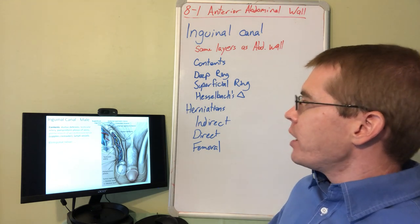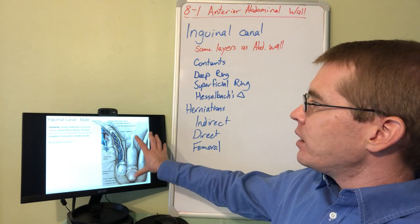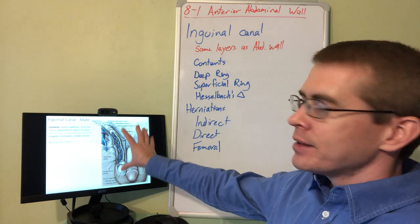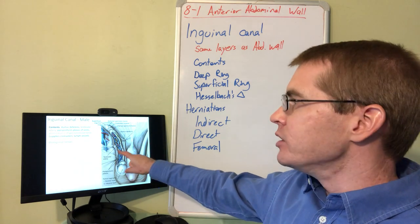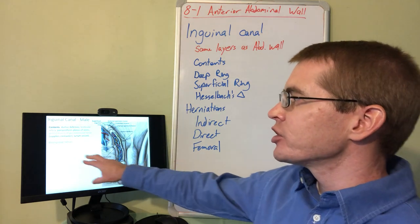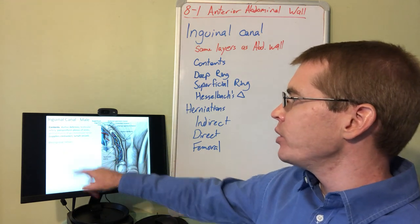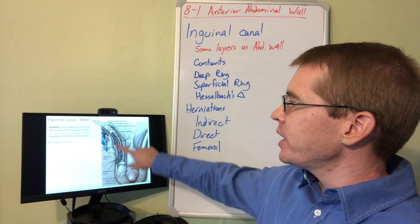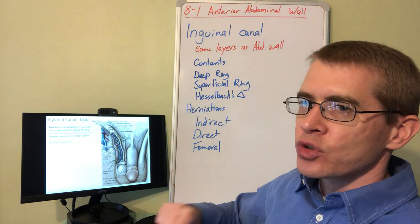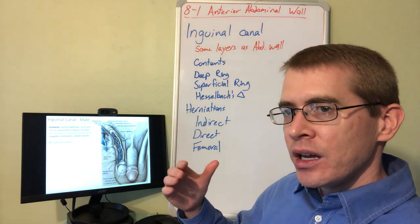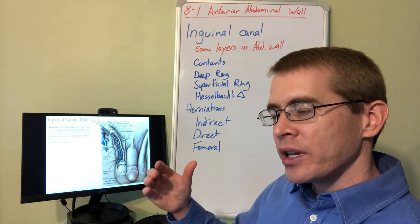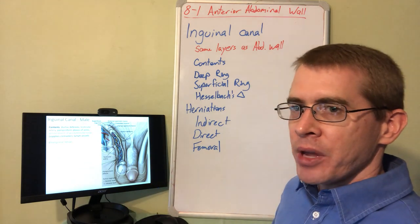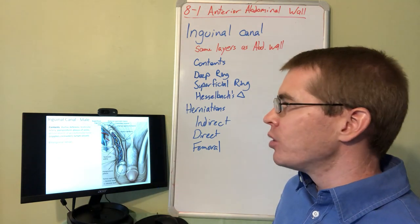Again, looking at the contents of the spermatic cord and noting the distinction: the ilioinguinal nerve is not located inside the spermatic cord. It is located inside the inguinal canal, but not within the male spermatic cord.